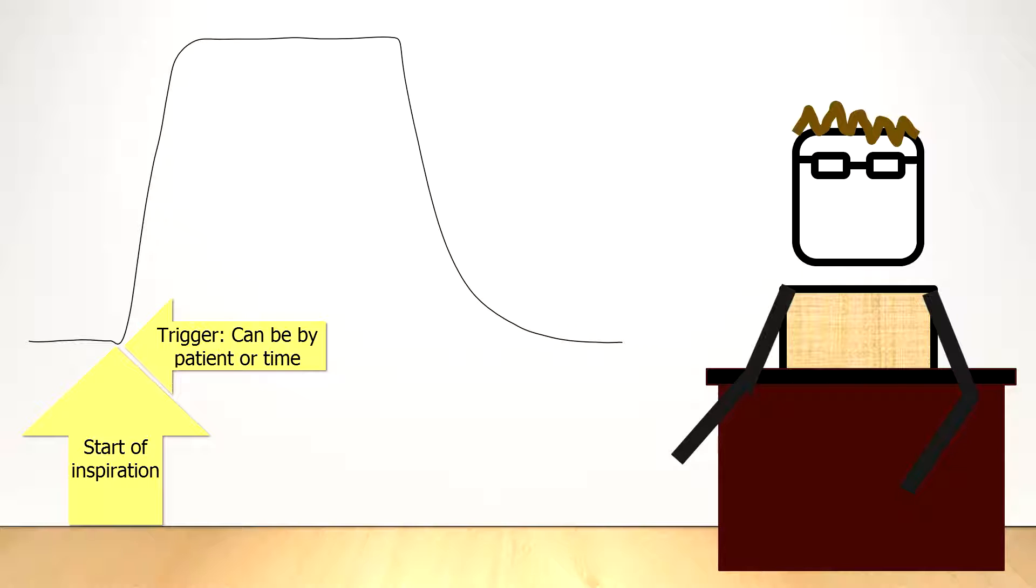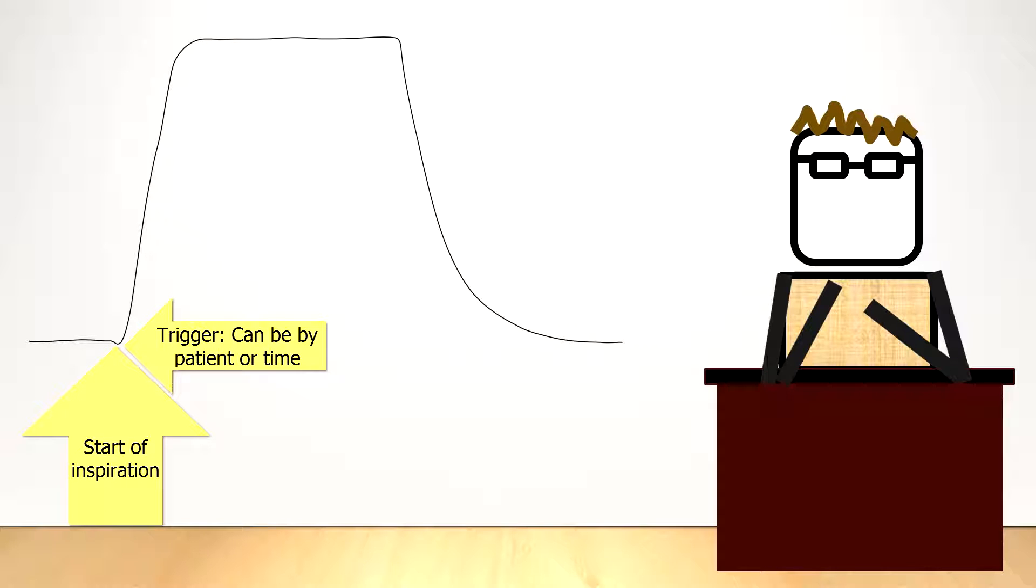One of two things can trigger the ventilator. Either the patient can request a breath, or a certain amount of time can elapse. The patient can trigger by starting to take a breath. The ventilator senses this and notices a drop in the pressure in the ventilator tubing, or that there's an increase in flow through the ventilator circuit. This is the clue to the ventilator to initiate the next breath.